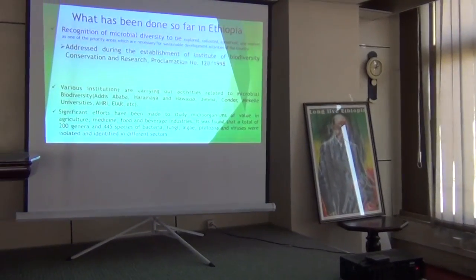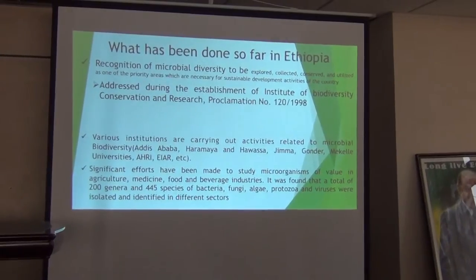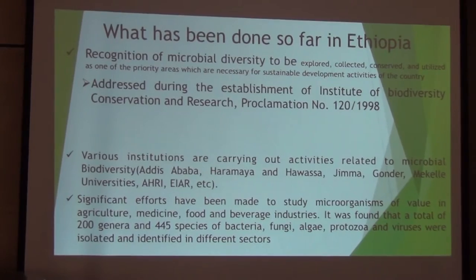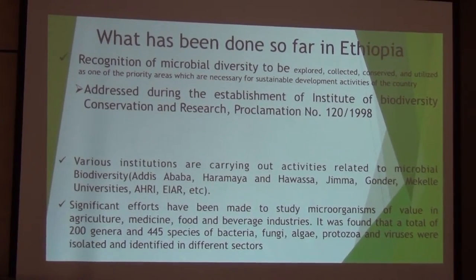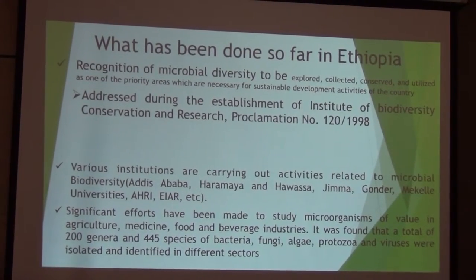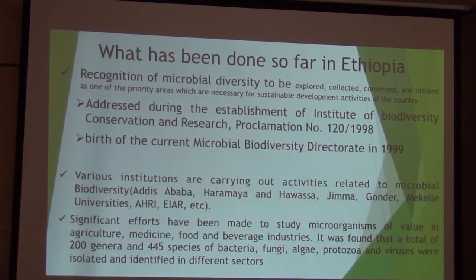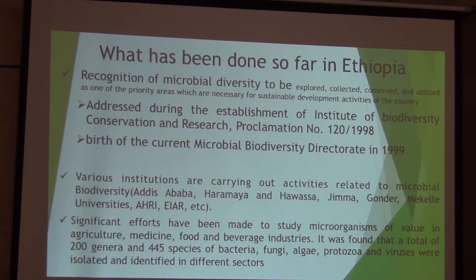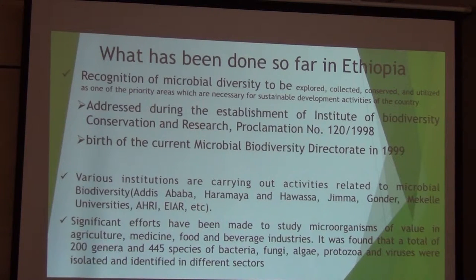What has been done so far in Ethiopia? The first milestone done in our country is the recognition of microbial diversity to be explored, collected, conserved, and utilized as one of the priority areas necessary for the sustainable development of the country. This was addressed during the establishment of the Ethiopian Biodiversity Institute — or Institute of Biodiversity Conservation Research — under proclamation 120 of 1998. The birth of the current microbial biodiversity department was in 1991, and we started to work on microbial biodiversity since 1999.